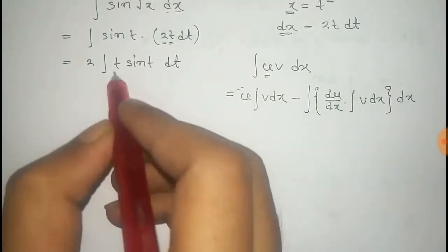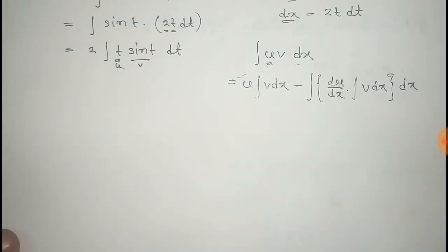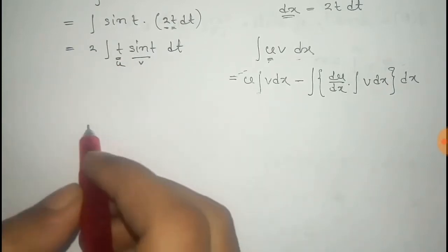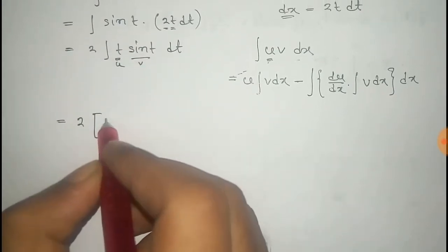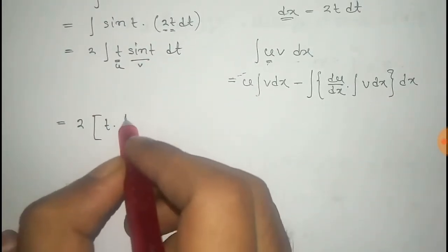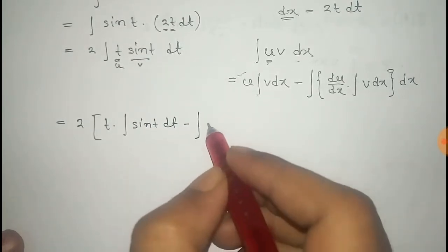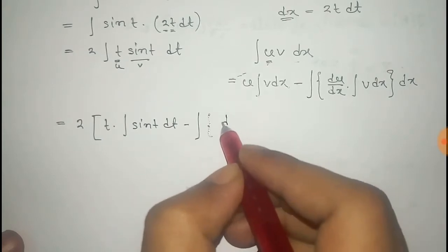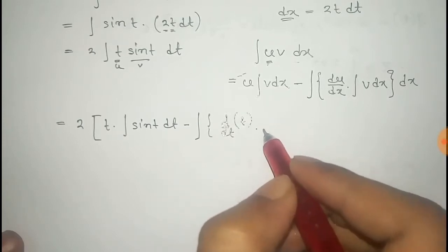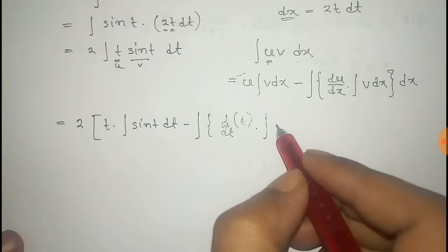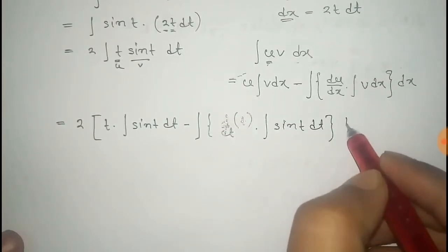Now I apply this formula. Taking t as u and sin(t) as v, and applying the integration by parts formula, we get: 2 times [t into the integral of sin(t) dt, minus the total integral of the derivative of t into the integral of sin(t) dt].